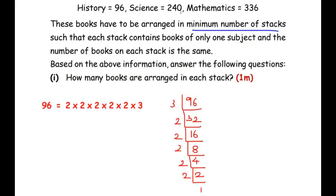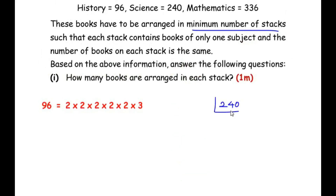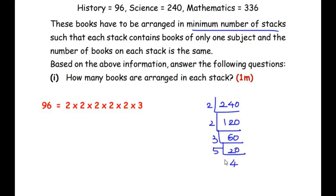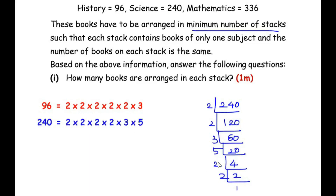Now let us prime factorize 240. Dividing by 2: 2 × 120, then 2 × 60, then 3 × 20, then 5 × 4, then 2 × 2, and finally 2 × 1. Writing down all the factors of 240: 2 × 2 × 2 × 2 × 3 × 5, that is 2⁴ × 3 × 5.